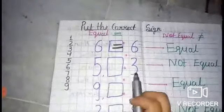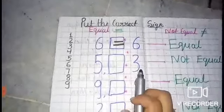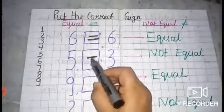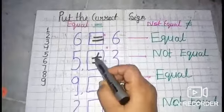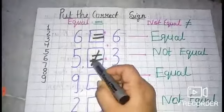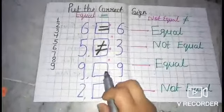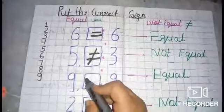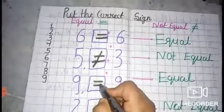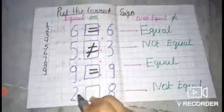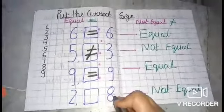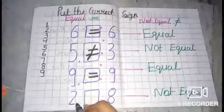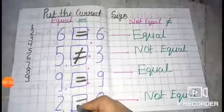Next: five and three. Three is smaller, five is bigger — so the sign is not equal to. Next: nine and nine — nine and nine are equal, so the sign is equal. Next: two and eight — eight is bigger than two, two is smaller — so the sign is not equal to.